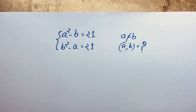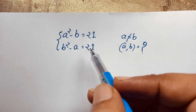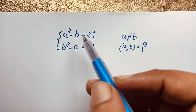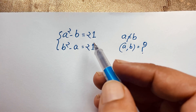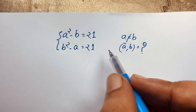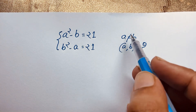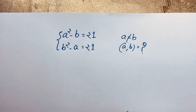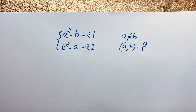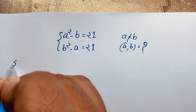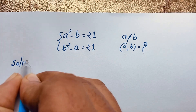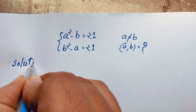Hello everyone, welcome to Rasha's classroom. Today we are solving an interesting algebra problem: a squared minus b is equal to 21, b squared minus a is equal to 21, and a is not equal to b. What is ab? How to solve this interesting math question? I will solve this question using an easy method.